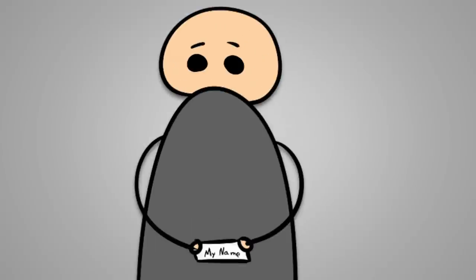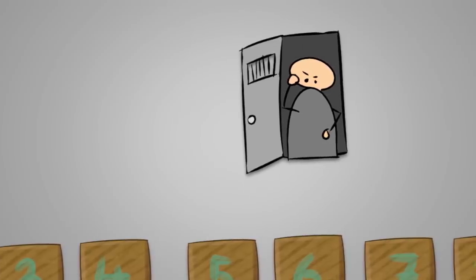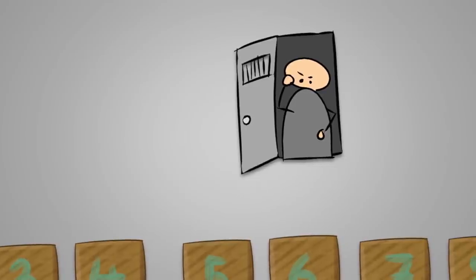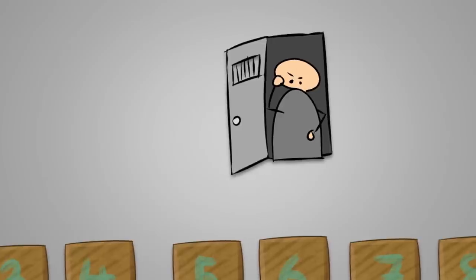Once prisoner 1 opens the box that contains his own name, he doesn't need to continue opening boxes and he can exit the room. Now prisoner 2 will enter the room, start with box 2 and do the same thing again. Prisoner 3 will start with box 3, prisoner 4 with box 4, and so on.